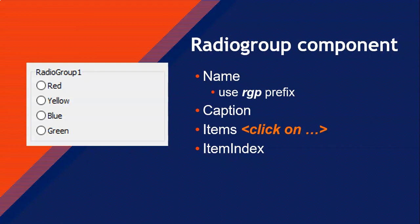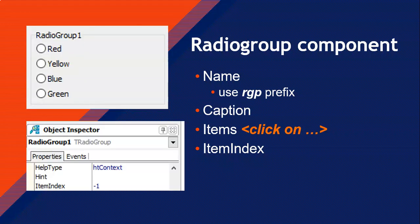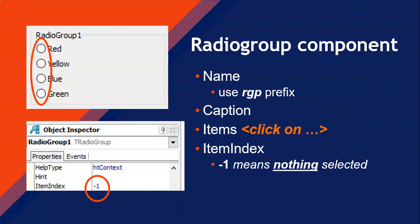The next property — and the most important one — is the item index. The item index tells us which option was selected. At the moment it's negative one, which means nothing is selected. You could use that for a validation check: if the item index is negative one, show a message saying please select one of the options.